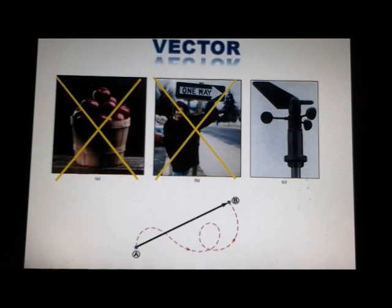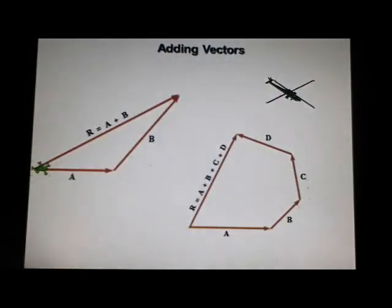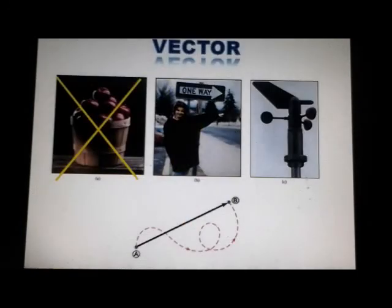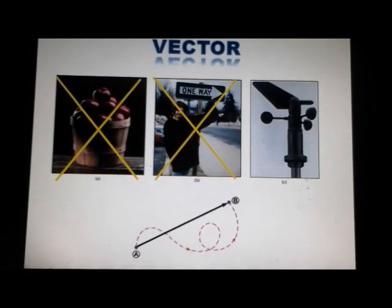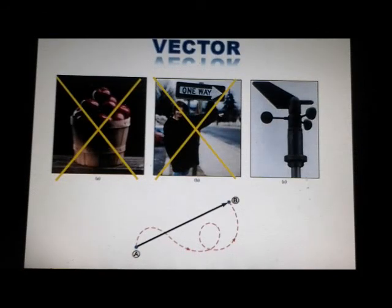In figure C, an anemometer is a device meteorologists use in weather forecasting. The cup spins around and reveals the magnitude of the wind velocity. The pointer indicates the direction.